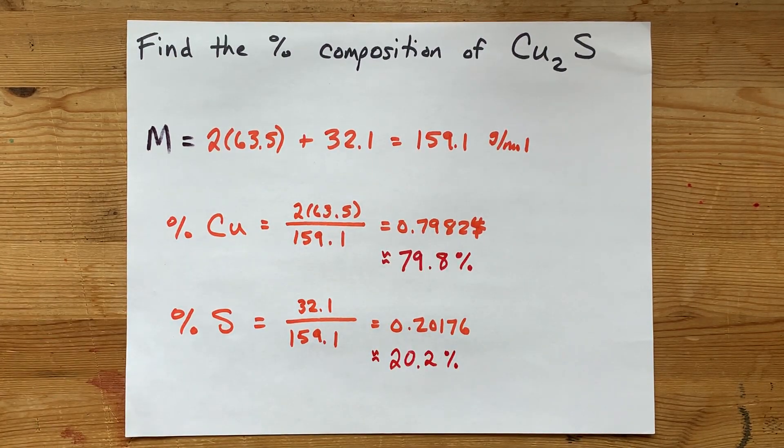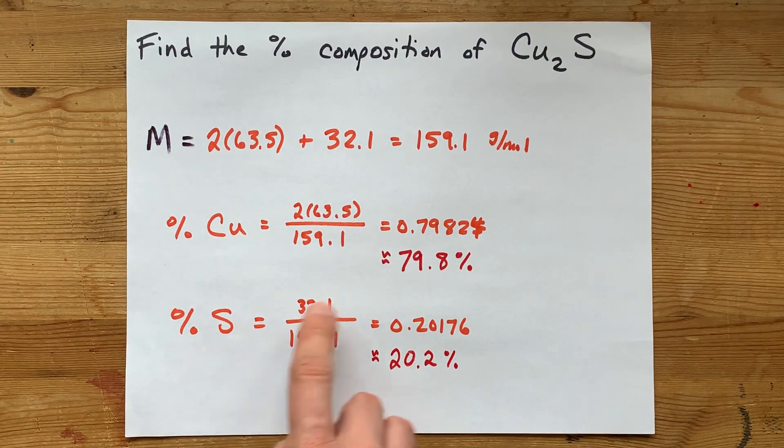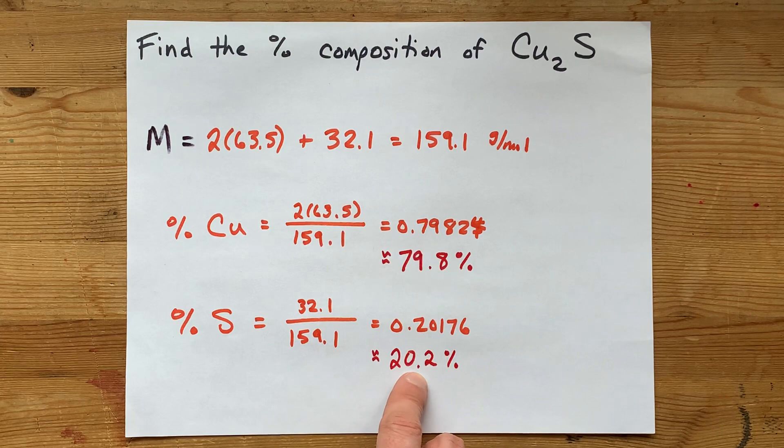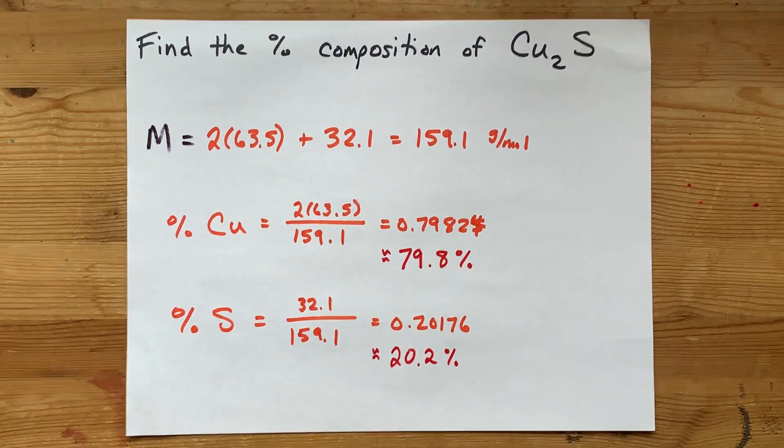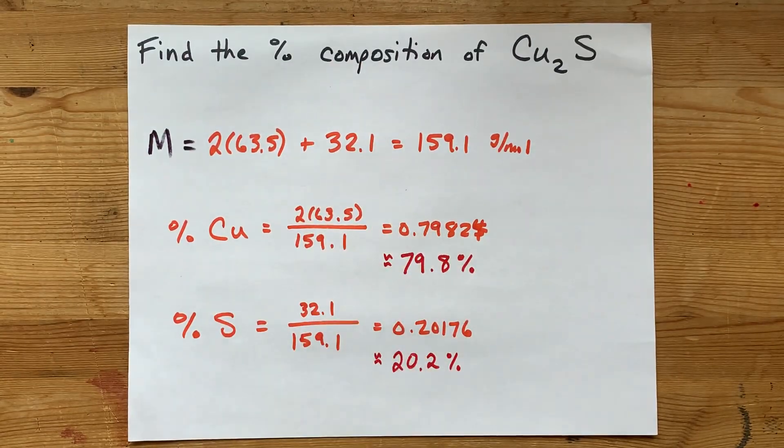Great. The percent composition is 79.8 percent copper, 20.2 percent sulfur. Your numbers will only vary here because you probably have a couple more decimal places than I do. But hey, you did it with me. You can do this. Best of luck.